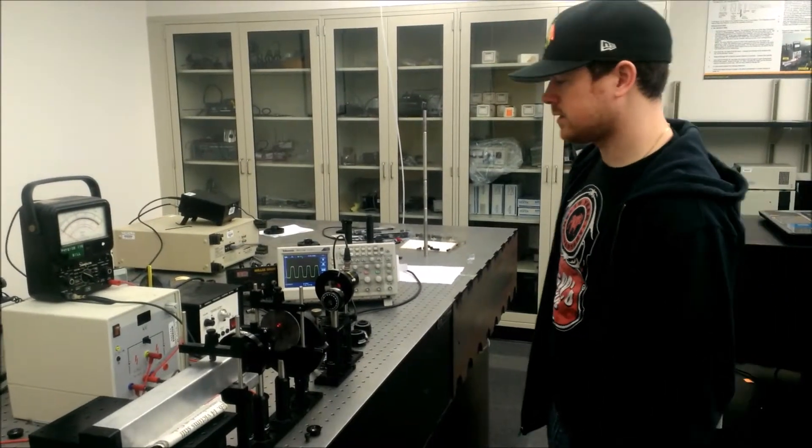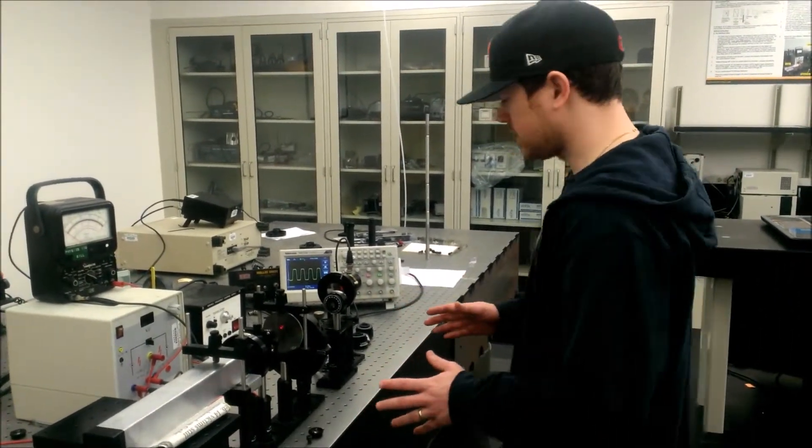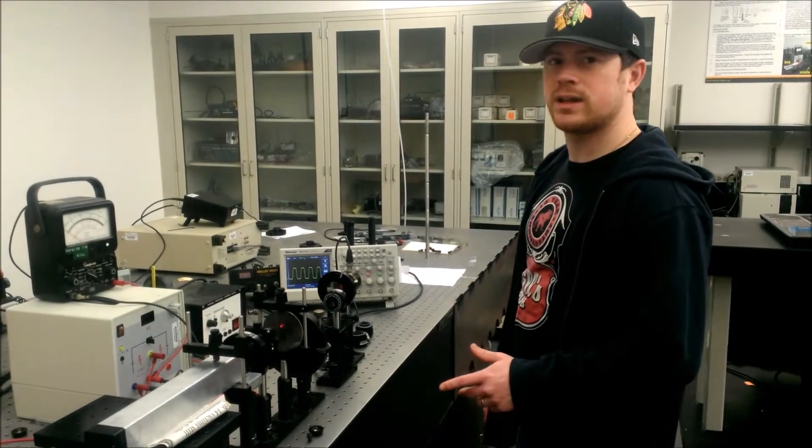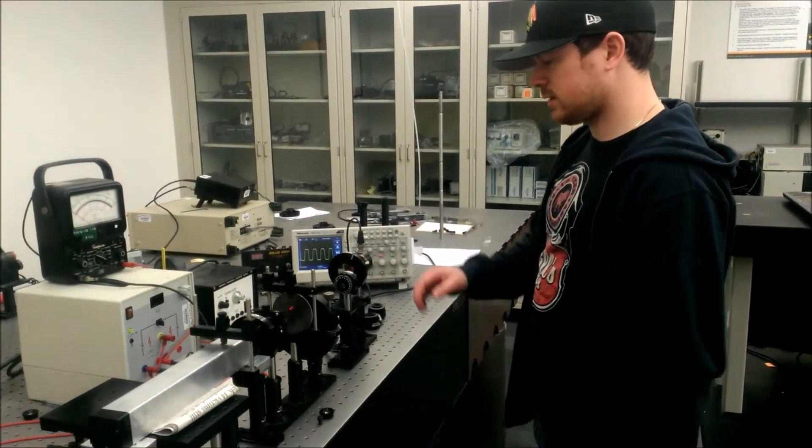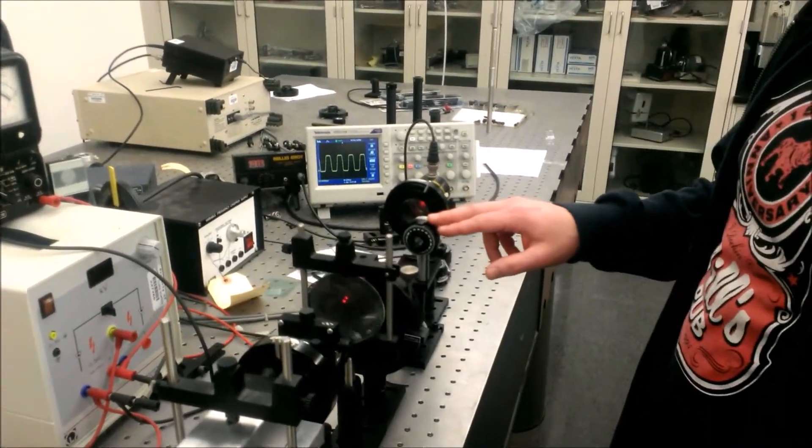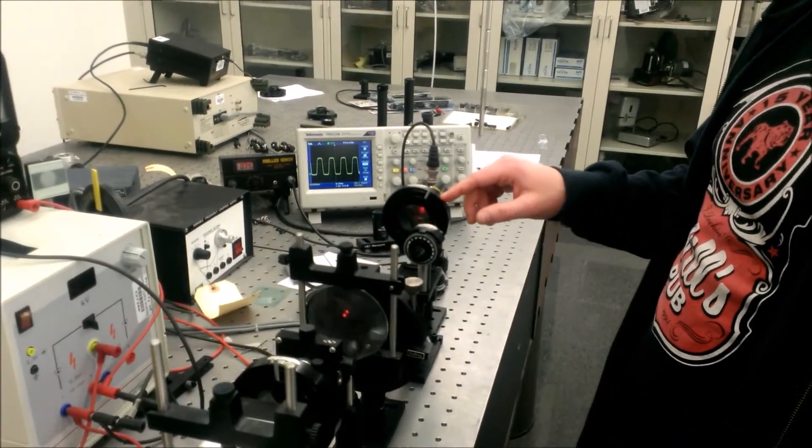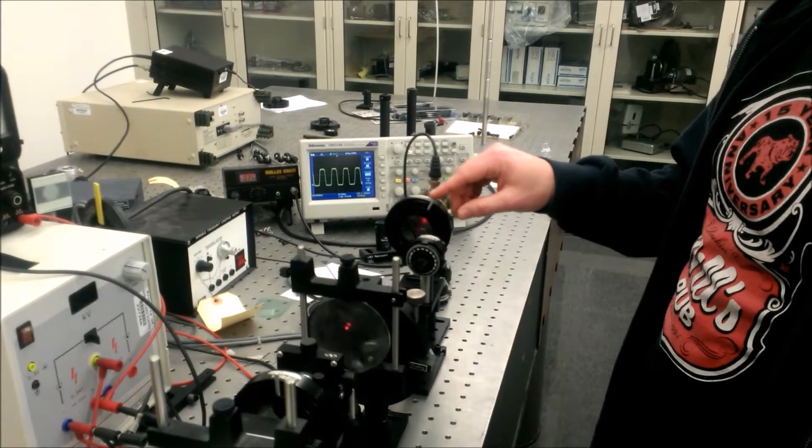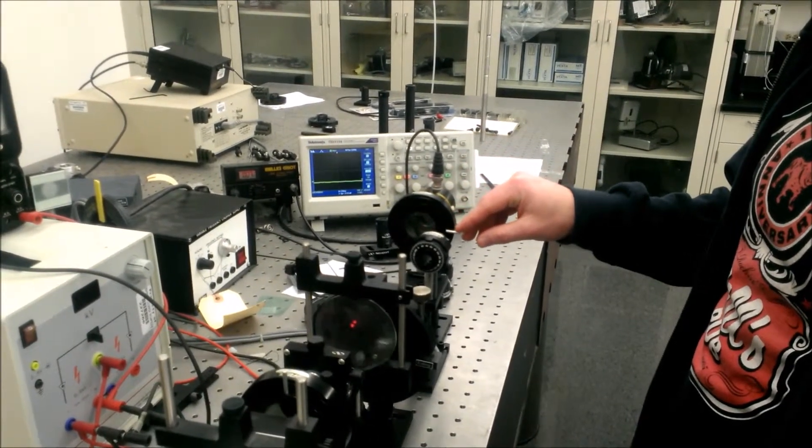For the second part of the experiment, the setup is going to be the same, except we're going to replace the half plate with a quarter plate. And as in the first step, without the plate in view, you want to zero out the analyzer and extinguish the light, which is roughly 90 degrees.